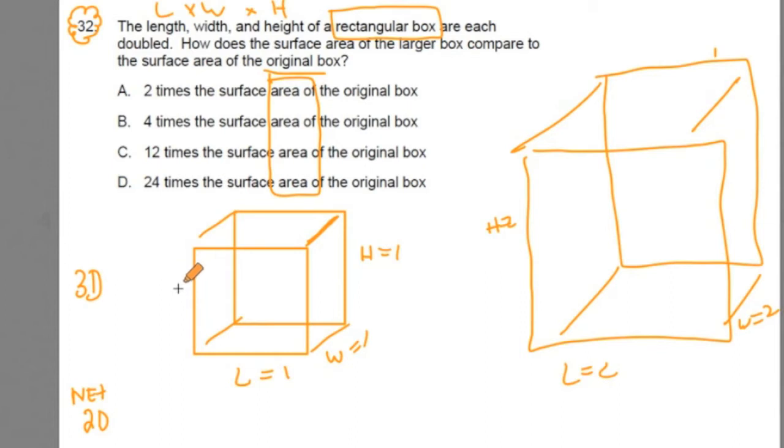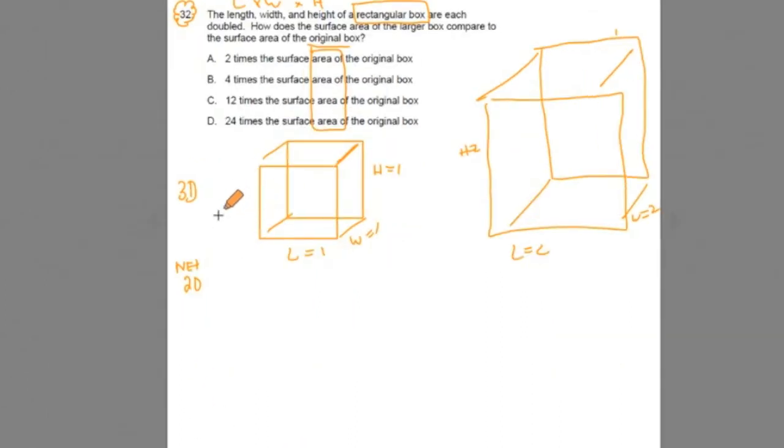So here we have a rectangular box or cube. I'm going to take this cube, and I'm going to represent it as its 2D net. A net is a 2D representation of a 3D object.